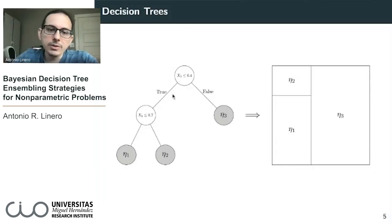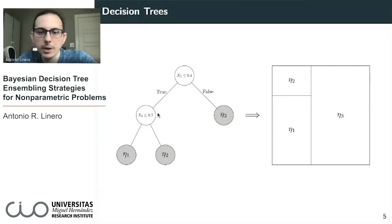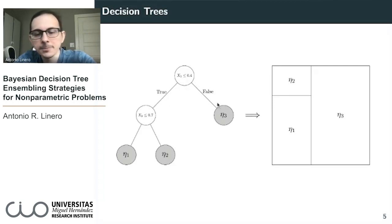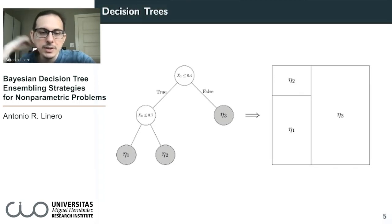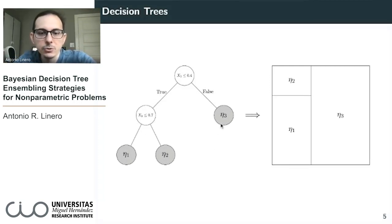There's an equivalence between decision trees and step functions. A decision tree takes as input two variables x1 and x2. The first has a splitting rule — x1 ≤ 0.4. I go left if true and right if false. Then I get to another decision rule: x2 ≤ 0.7. This maps to a partition of the predictor space. The function I end up estimating is a step function, and at the leaf nodes, the etas are the predictions the tree furnishes.